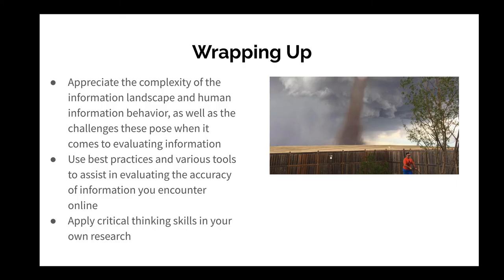Wrapping up, today we talked about the complexity of the information landscape. We also talked about human information behavior — some of the affective and cognitive dimensions of information seeking. We talked about the challenges these pose when it comes to evaluating information. We also talked about best practices like reading laterally and not relying on simple lists of good versus bad sources. We covered some tools to assist in evaluating the accuracy of information encountered online. And finally, I hope you are encouraged to always and consistently apply critical thinking skills in your own research. Thank you very much.